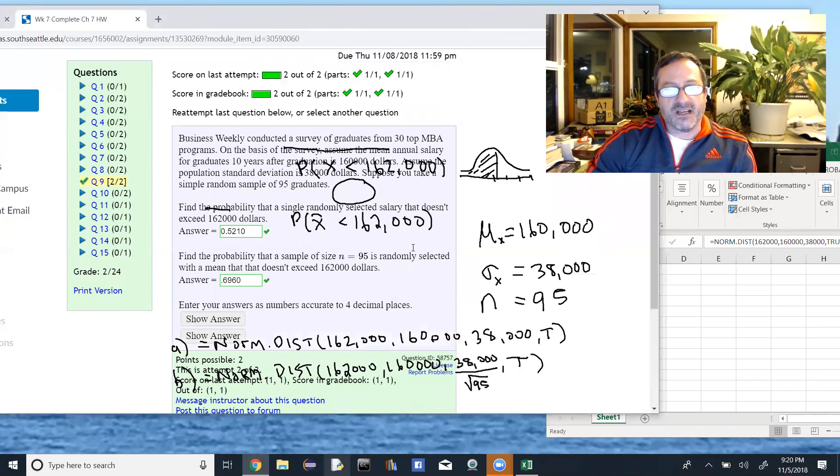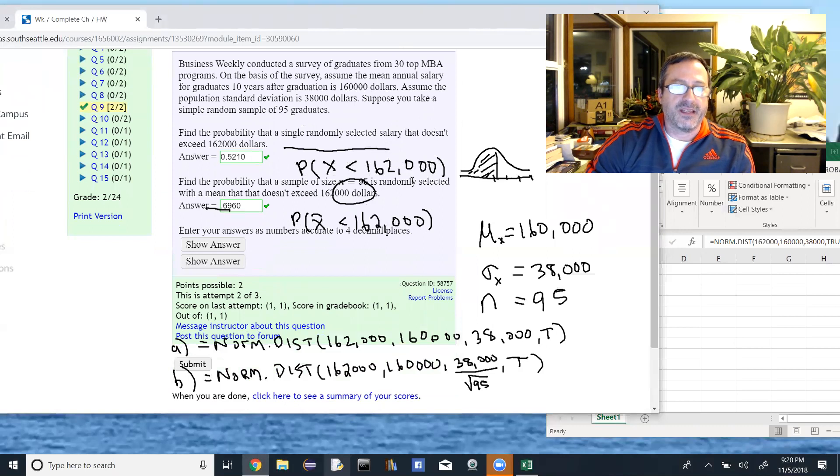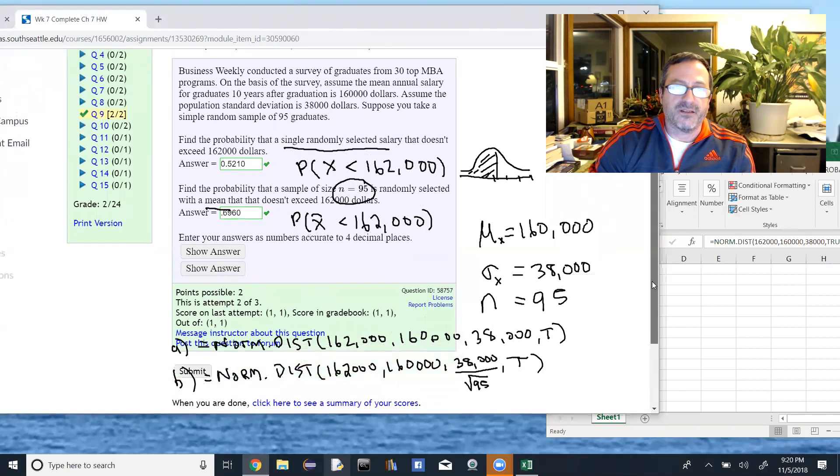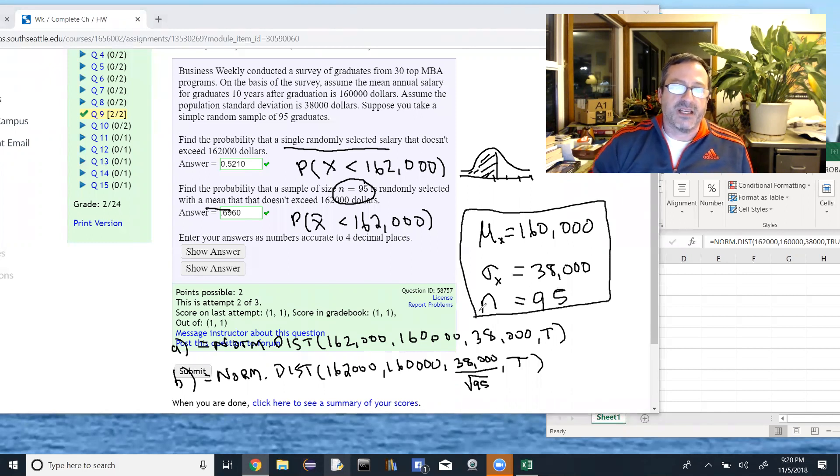So the key there on here is that in the initial problem you're looking at the probability the original random variable x is less than 162, so you use the values that you're given over here for our mean and our standard deviation. And then for the second part, because we're looking at a sample of size 95, we're looking at the probability the sample mean doesn't exceed 162,000, so that's the x bar here, and then we use our central limit theorem that says the mean is the same, 160,000, but the standard deviation we have to take the original one and divide by the square root of n.